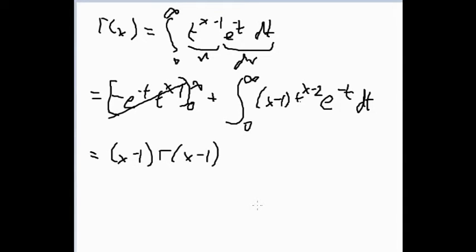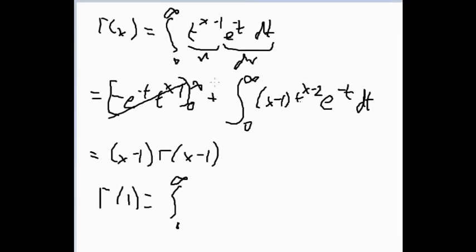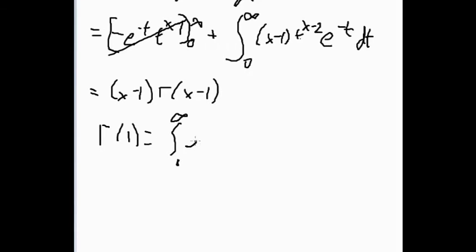And you can notice that the factorial function follows exactly, well, almost exactly the same, or almost exactly the same recurrence equation. So all we need to do is just evaluate gamma of 1, for example. So gamma of 1 is just integral from 0 to infinity. And then when x is 1, this t to the 1 minus 1 just disappears. So we just have e to minus t dt. And this is just an elementary integral, and it's just 1.